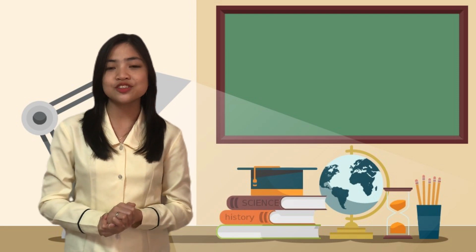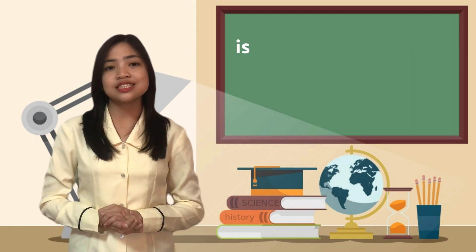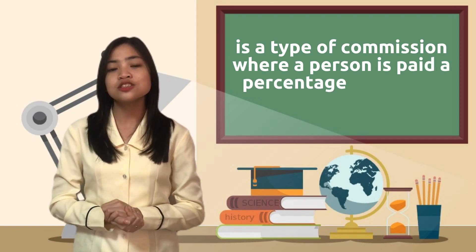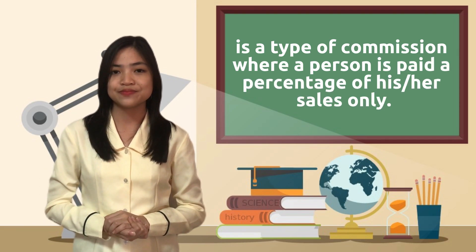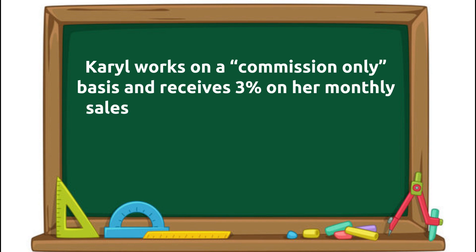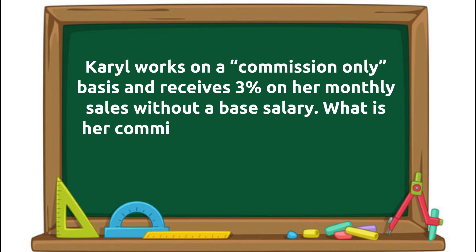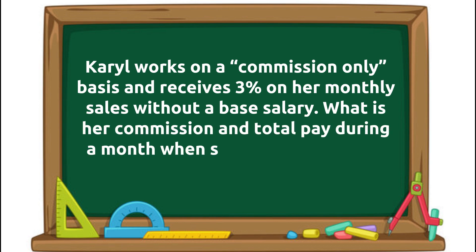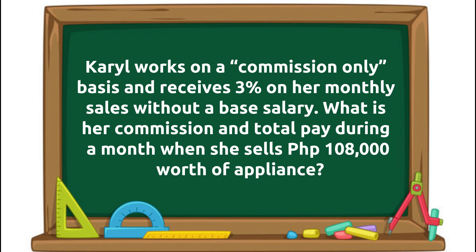Let us tackle first the straight commission. Straight commission is a type of commission where a person is paid a percentage of his or her sales only. Let us take a look at this example. It is called a straight commission because the commission is straightly given to the worker.